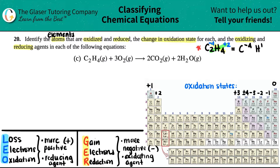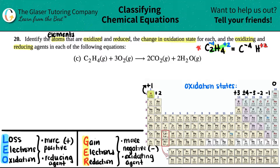So C was negative four and H was positive two. However, we check the trend: H wants to be a positive one, especially when it's with non-metals. This is a covalent compound — covalent compounds never get simplified — so we do the simplifying here. To get positive two down to positive one, divide by two. Whatever you do to one side you do to the other, so carbon becomes negative two and hydrogen becomes positive one.